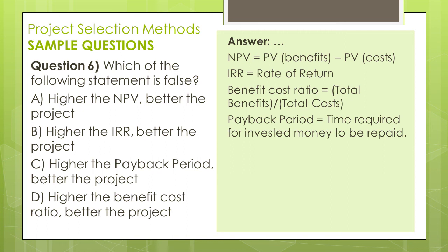Benefit cost ratio is total benefits divided by total costs. To increase the benefit cost ratio, you need to either increase total benefits or decrease total costs. So higher benefit cost ratio means higher total benefits and lower total costs — therefore, higher benefit cost ratio means a better project. Payback period is the time required for invested money to be repaid. Since we want our invested money repaid as soon as possible, we prefer the project with the lowest payback period. So lower, not higher, payback period means a better project. Therefore, the answer is C.